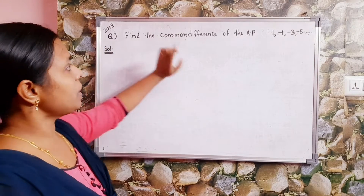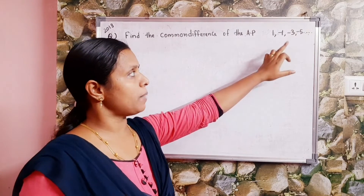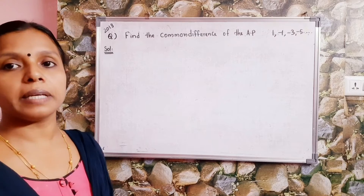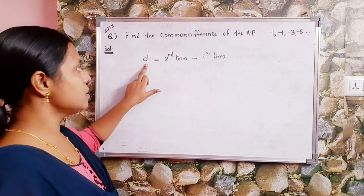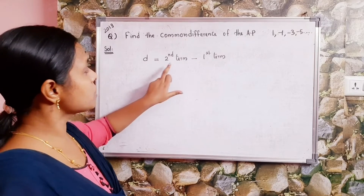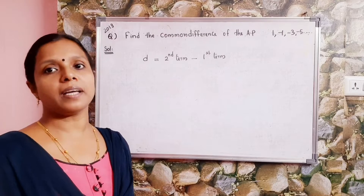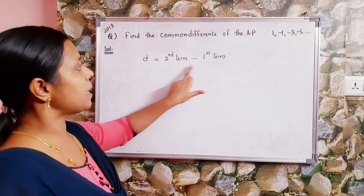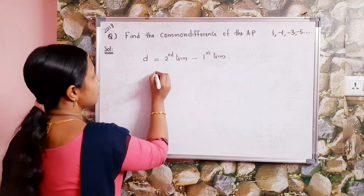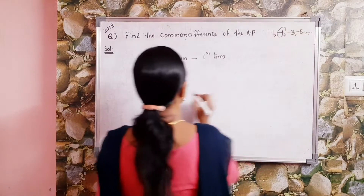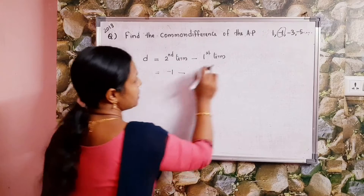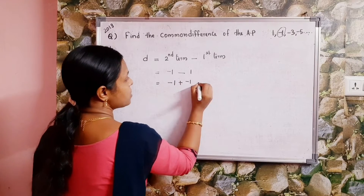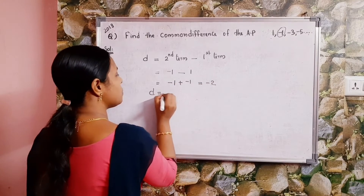First question: find the common difference of the AP 1, -1, -3, -5, etc. We calculate the common difference d, which equals the second term minus the first term. So d equals -1 minus 1, which gives us -2. Therefore, common difference d is equal to -2.